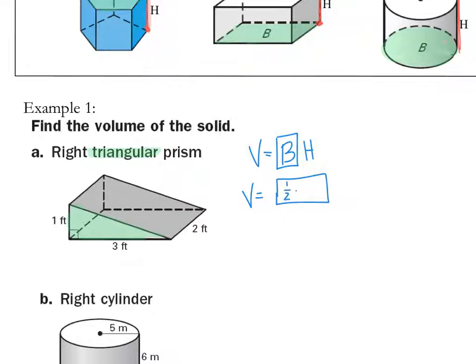So, 1 half, and my base is 3, and my height is going to be 1, because that's my triangle. And then the height is going to be the distance between those two bases. So, it's going to be 2. So, I can punch all that in my calculator, or you can do it in your head, because it's not that difficult. It's going to be 3 feet cubed, is my total answer.